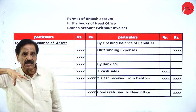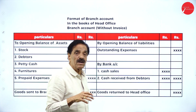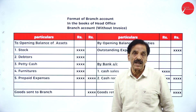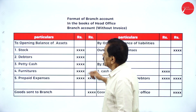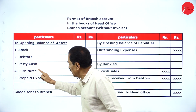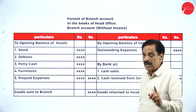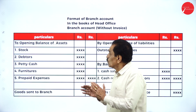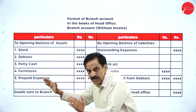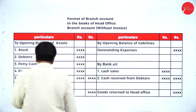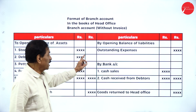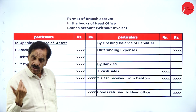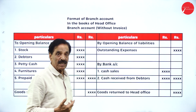What is the format? How to prepare the branch account? I have given the format of the branch account. It starts with the opening balance of assets: stock, debtor, petty cash, furniture, and prepaid expenses. This is the opening balance — the closing balance of the last year becomes the opening balance for the next year. Whatever the opening balance is there, the same should come on the closing side. Then, goods sent to branch — the head office will send goods to the branch. On the credit side: opening balance of liabilities, outstanding expenses — maybe outstanding salary, outstanding rent, or outstanding wages by bank account.